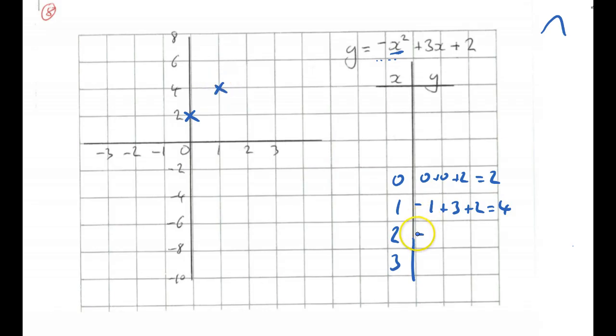For x equals 2, negative 2 squared is 4, plus 3 times 2 is 6, plus 2, that's 2. That would also be 4, so 2 is also 4.